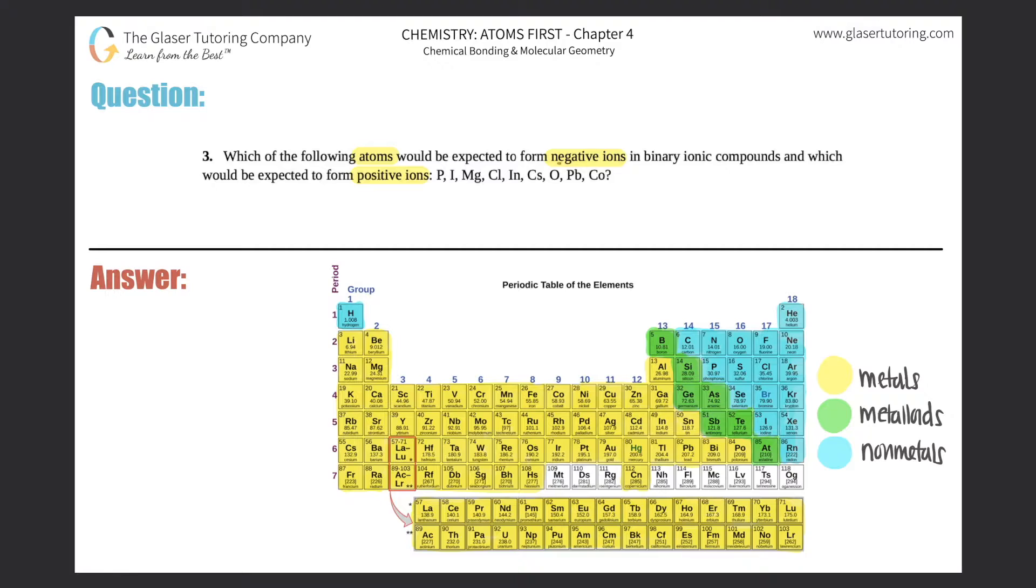How are we going to figure out which ones are negative and which ones are positive? This comes from an oxidation trend, another trend that we have to memorize when we look at the periodic table.